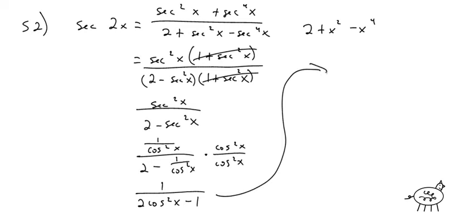2 cosine squared of x minus 1 is the same thing as cosine of 2x. So that's 1 over cosine of 2x, which is just the reciprocal — secant of 2x. So we get secant of 2x equals secant of 2x.